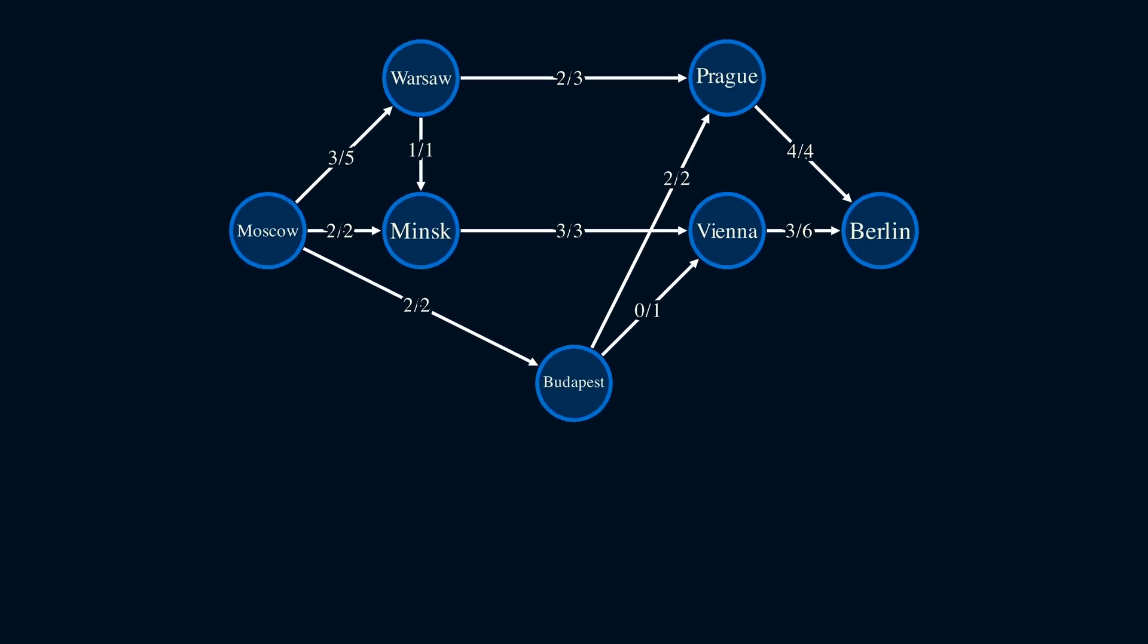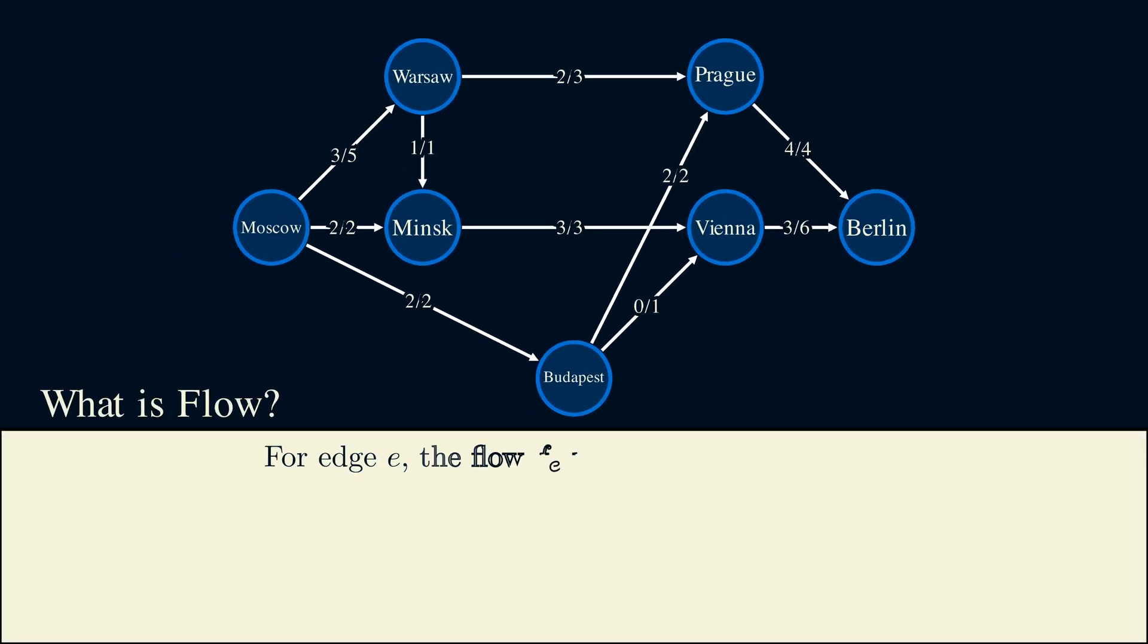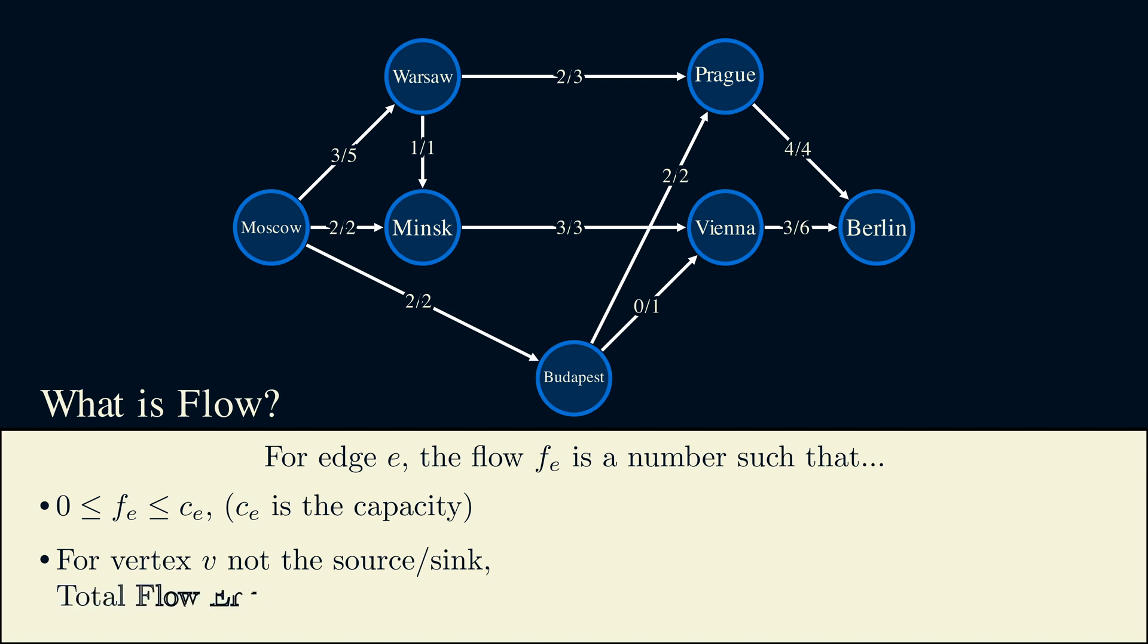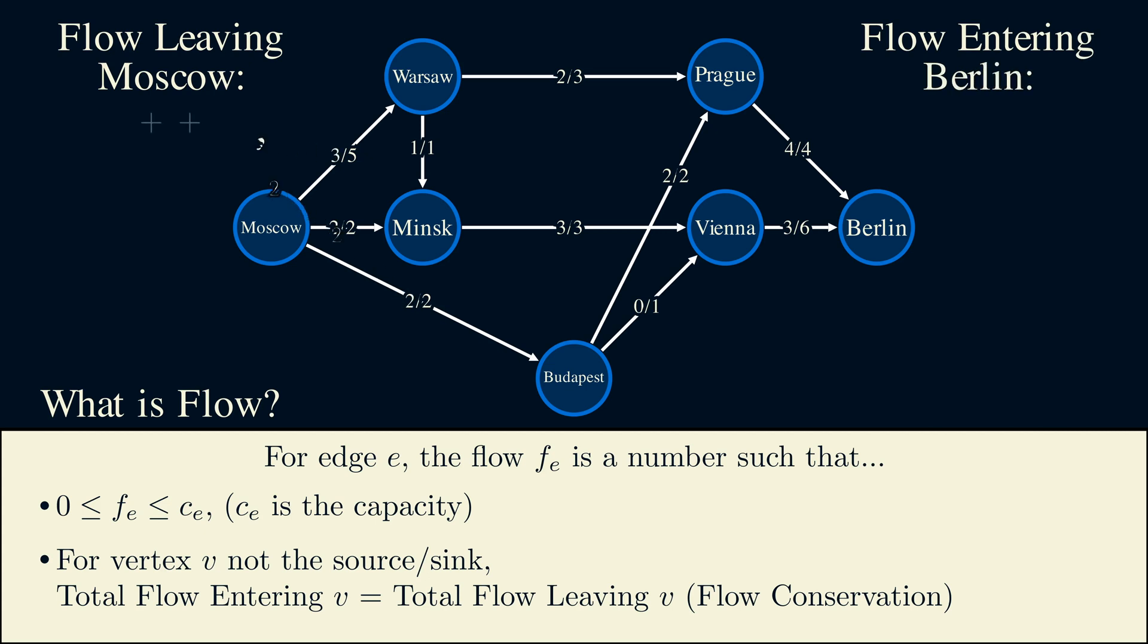From this example, we can see that flow is just a number assigned to the edges that satisfies a few properties. First, the flow can't be more than the capacity of the edge, but it also has to be non-negative. We can't have a negative flow. For any vertex that's not the source or the sink, meaning it's not Moscow or Berlin in our example, the total flow coming in equals the total flow leaving. This is called flow conservation. For example, we have three trains entering Minsk, so there needs to be three trains leaving Minsk. This condition also implies that the total flow leaving the source has to equal the total flow entering the sink. Since the trains leaving Moscow can't stay in a city, they have to end up in Berlin.